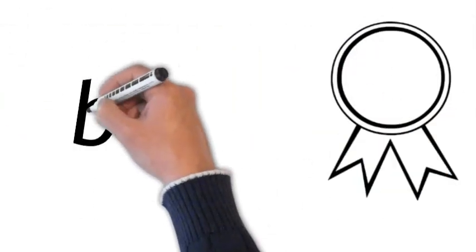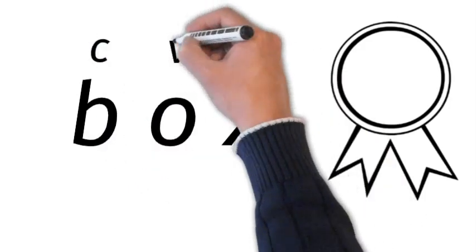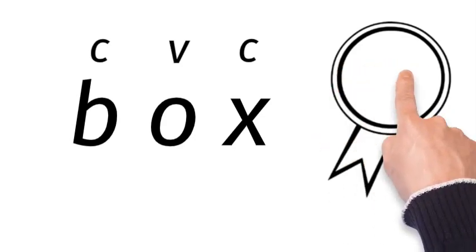Now we go to the spelling bee. You have to say the name of the letters at the spelling bee. B, O, X. The B is a consonant, the O is a vowel, and the X is a consonant. It's a CVC word. So B, O, X, box.